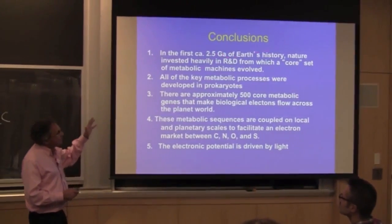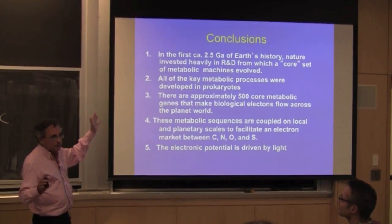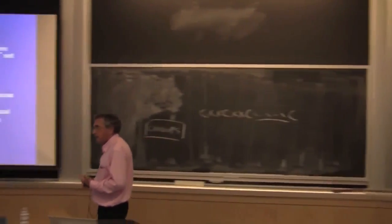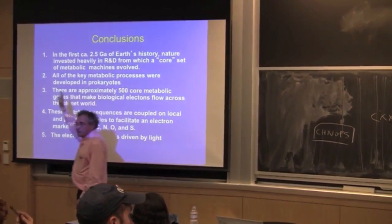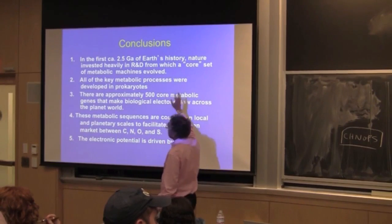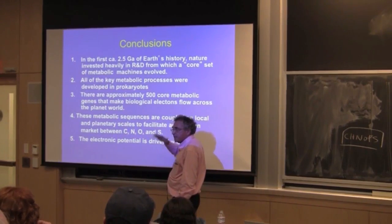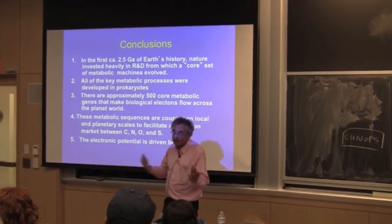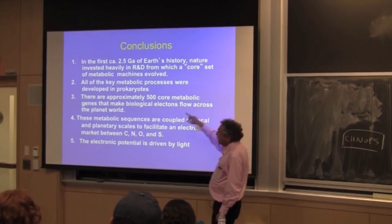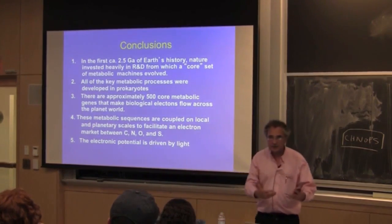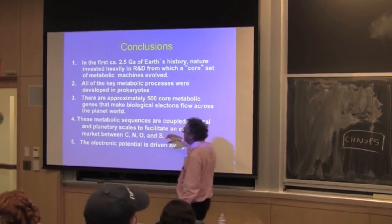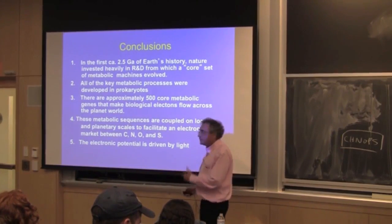So let's go back. During the first 2.5 billion years of Earth's history, nature invested in a research and development phase — the Silicon Valley time. A lot of young actors on the stage, fearless, trying things out. A lot got culled, from which a very small core set of nanomachines evolved — roughly 35 transistors. All the key processes were developed in prokaryotes; eukaryotes did not invent a single thing. There are approximately 500 core genes that make biological electrons go round. These metabolic sequences are coupled on planetary scales, and the electrical potential is driven by light.